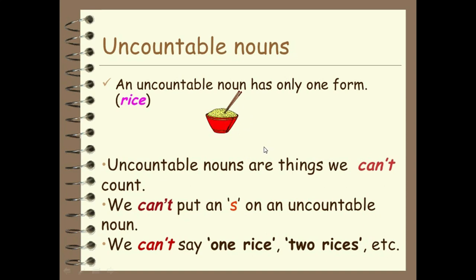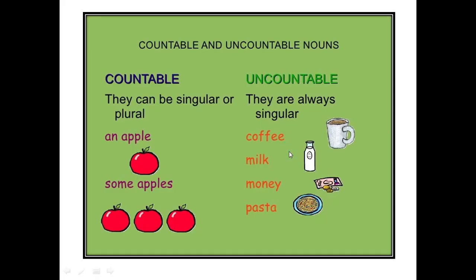This is very clear from this picture that countable nouns can be singular or plural, like 'an apple' or 'some apples.' An is used with apple because A is a vowel. We know that there are five vowels — A, E, I, O, U — and with them we use 'an.' So apples are countable. You can say an apple, some apples, three apples, many apples like this.